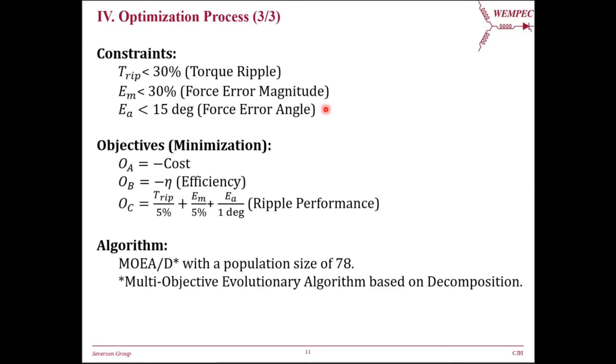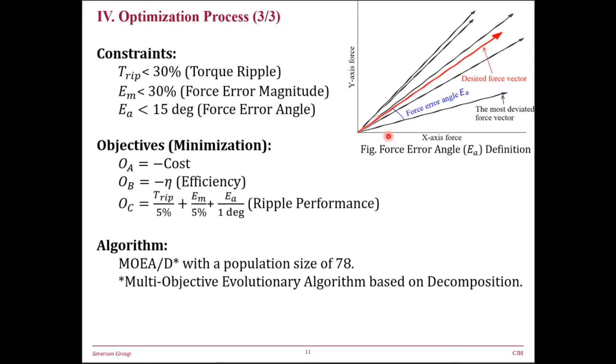When searching in the design space, motor designs that violate these ripple performance constraints are discarded. The motor ripple performance metrics include torque ripple, force error magnitude, and force error angle. The force error is unique to bearingless motors. At any time instant, the radial suspension force applied to the rotor can be modeled as a 2D vector. These force error quantities are worst-case values which are evaluated over an entire rotor revolution while trying to create a constant radial force vector. Particularly, force error angle is defined as the angle between the most deviated force vector and the desired force vector.